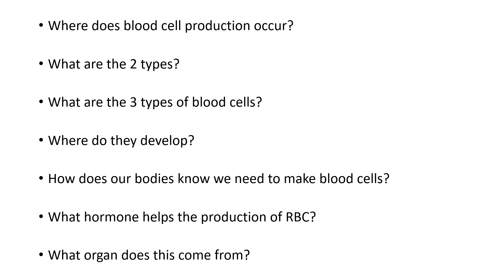A bunch of questions. Where does blood cell production occur? Blood cell production occurs in the bone marrow. And if you remember from A&P, the bone marrow is that soft material that fills the core of our bones.